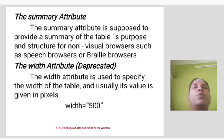The summary attribute is supposed to provide a summary of the table's purpose and structure for non-visual browsers such as speech browsers or Braille browsers. The width attribute (deprecated) is used to specify the width of the table, and usually its value is given in pixels. Example: width equals 500.